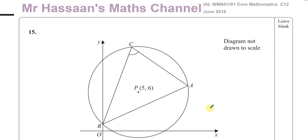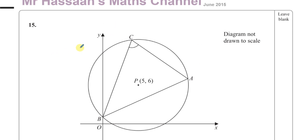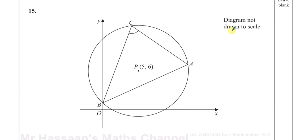Welcome back. This is Mr. Hassan's Maths Channel and I'm now answering question number 15 from the June 2015 IAL, International A-Level, Core Mathematics C12 paper. This is before the new specification, but this is a question from P2 — the new P2 syllabus — which is basically to do with equations of circles, coordinate geometry and circles. Here we've been given this diagram, which is not to scale.